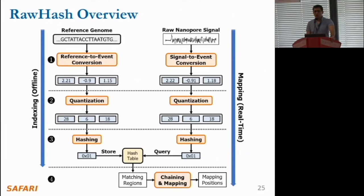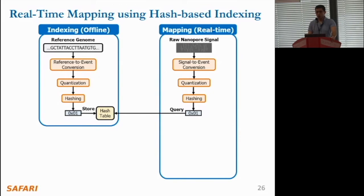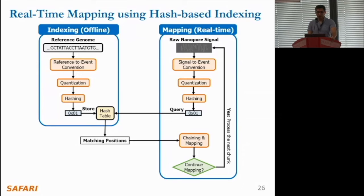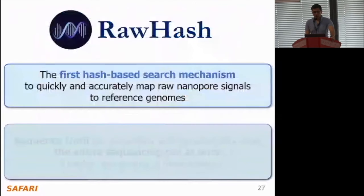In the fourth step, we put all these steps together to perform real-time mapping. In both indexing and mapping steps, we generate hash values from reference genomes and streaming raw signals. For the reference genome, we store the hash values and their positions into a hash table to enable efficient queries during mapping. Hash values generated for raw signals in real time are then queried using this hash table to quickly identify matching positions between the reference genome and raw signals. We then perform chaining between these matching positions and identify the mapping accordingly. In real time, we decide whether to continue mapping a read, and if not, we tell the sequencer to stop sequencing a read or the entire run.